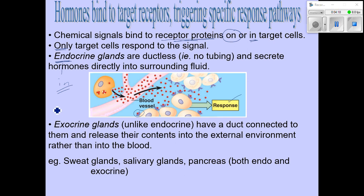The endocrine glands are distinguished from exocrine glands. Exocrine glands also exist in your body, but they release their contents onto the surface of your body rather than into the blood. The surface might be your skin in the case of your sweat glands, your mouth in the case of the salivary glands, or the lining of the small intestine in the case of the pancreas — which also happens to act both as an endocrine and an exocrine gland.